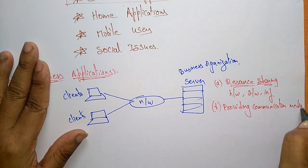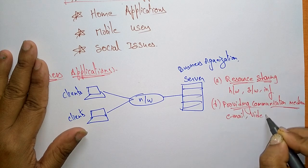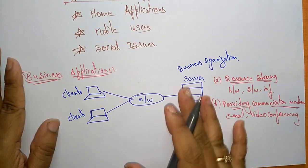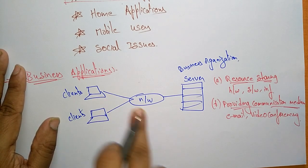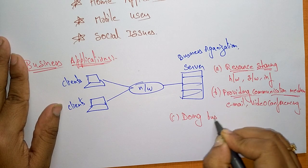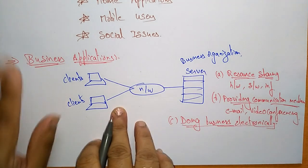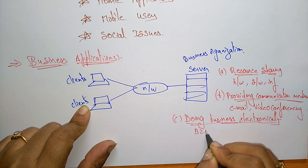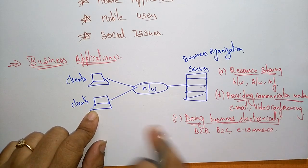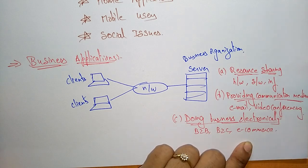What type of communication media are they providing? They are providing email and video conferencing. This network provides communication media through email and video conferencing. It also enables doing business electronically — like business-to-business, business-to-consumer, and e-commerce. In business applications, we can use the network for business-to-business communications or business-to-consumer, and in electronic commerce also.